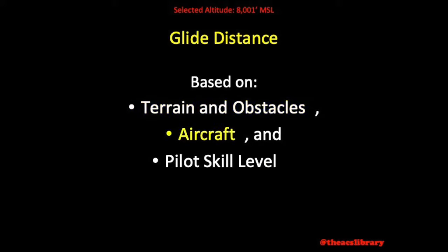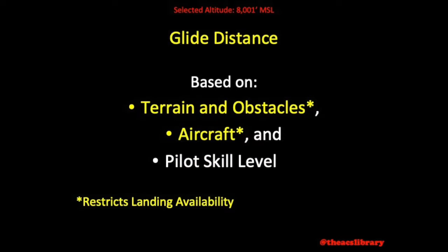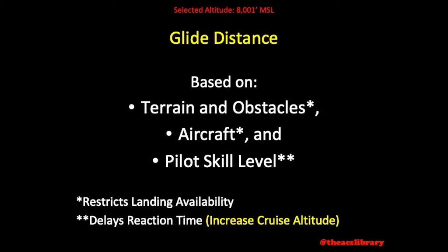Which brings us to our next point: glide distance. Altitude selection based on glide distance is very situational, based heavily on terrain and obstacles, aircraft, and pilot skill level. Terrain, obstacles, and aircraft potentially restrict landing availability. A pilot operating a Learjet over the metropolitan area of Manhattan, New York is going to have significantly less landing options available than the Diamond Star pilot in Manhattan, Kansas. Pilots' skill level simply determines the time required for the pilot to react appropriately. Pilots in unfamiliar aircraft may want to generously increase cruising altitude beyond the safe glide distance to allow more time to react in the event of an emergency.